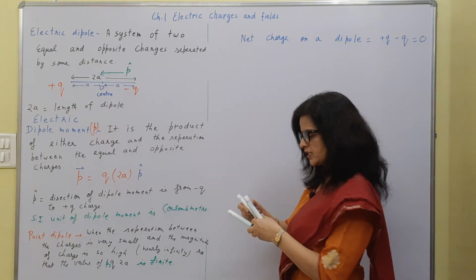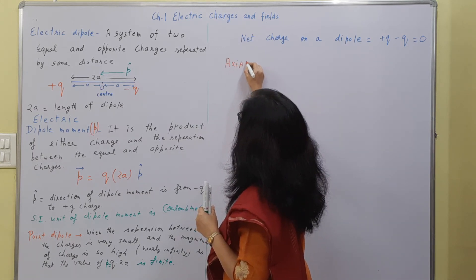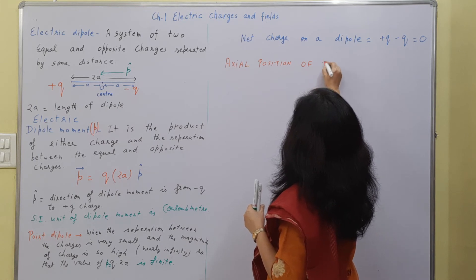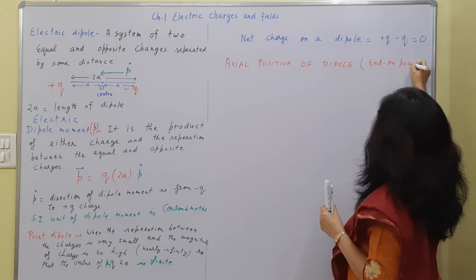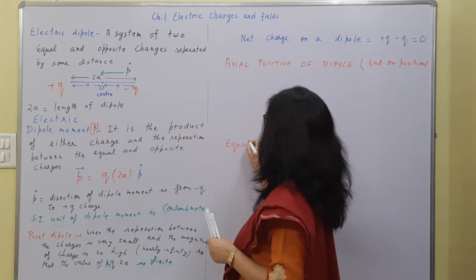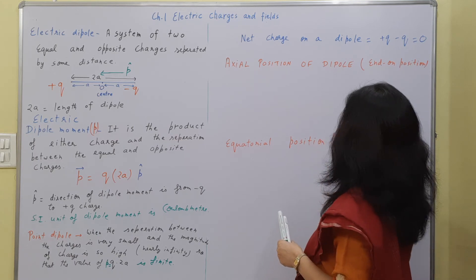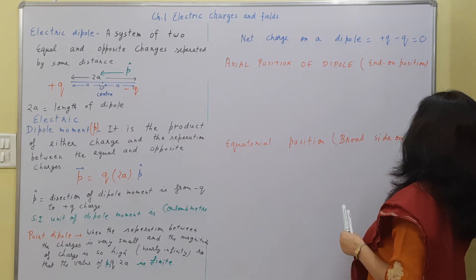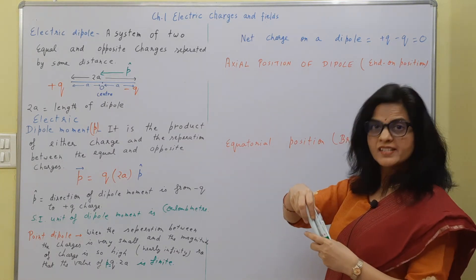We are discussing two specific positions. One is the axial position of the dipole, also called the end-on position. The second position is the equatorial position, also called the broad-side-on position. The axial position is the position which is on the axial line of the dipole.